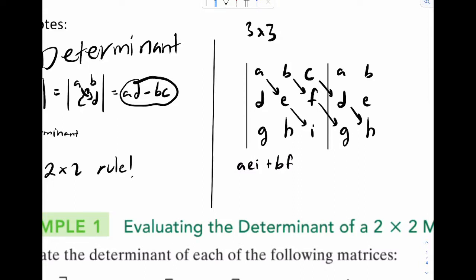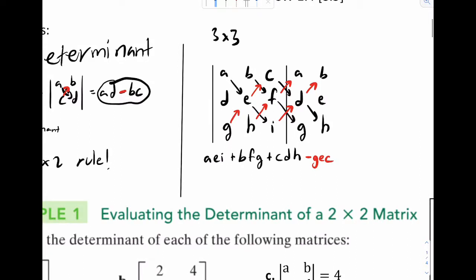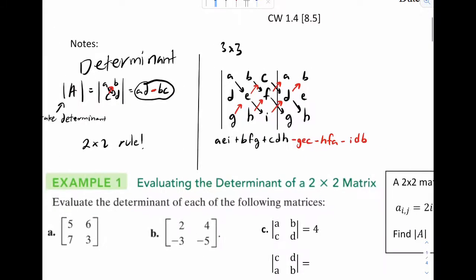Plus bfg, plus cdh. Now here's where it's a little bit different - you're going to go up now. Notice how there are three of these, and if you look at the other one, notice how this made minus bc. Same thing - it's going to be minus gec, minus hfa, minus idb. And that's how you do it.